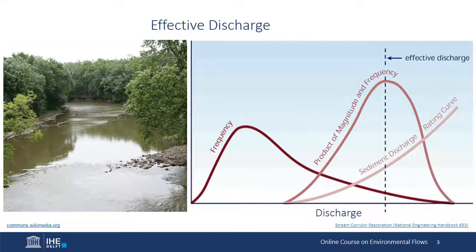Let's look more closely at the capacity of rivers to transport sediments. This figure shows the relationship between the frequency and magnitude of river flows to the load of sediment transported. The frequency curve plots the frequency of different discharges — the most frequent discharges are low flows. The sediment discharge rating curve shows a positive relationship: sediment discharge increases exponentially with increasing water discharge. But sediment discharge is virtually zero at low flows, which occur most frequently, meaning most sediment transport occurs only at higher flow levels and therefore infrequently.